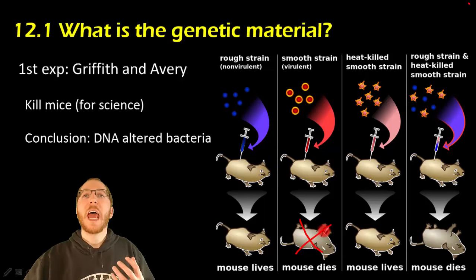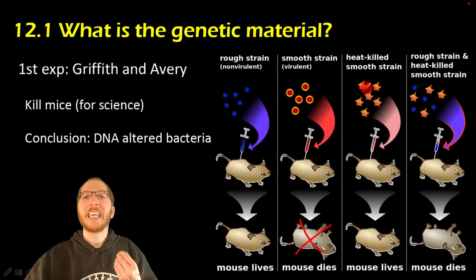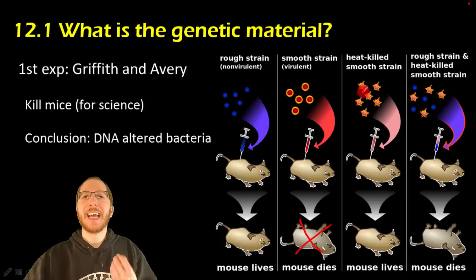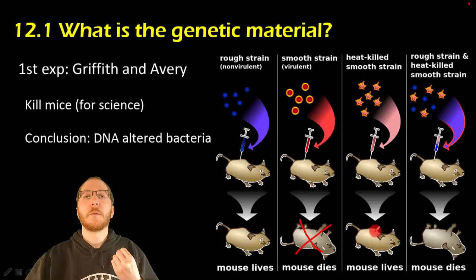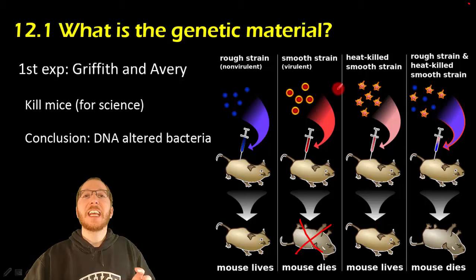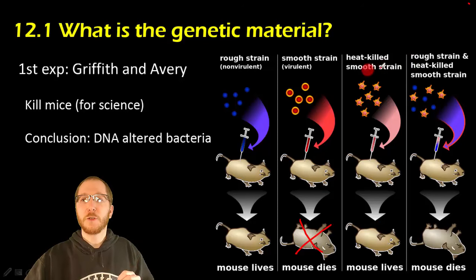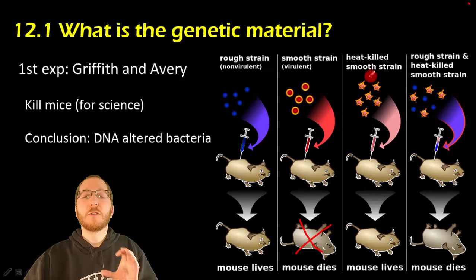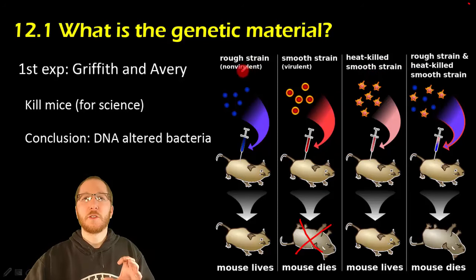Then he got the idea: what happens if I take this lethal version and heat it up to kill it? So the bacteria is dead. He injected that into a mouse and saw it did not kill the mouse. Then he got the idea of taking the remnants of the heat-killed smooth strain — the dangerous one — and mixing those remnants in with the non-lethal rough strain.